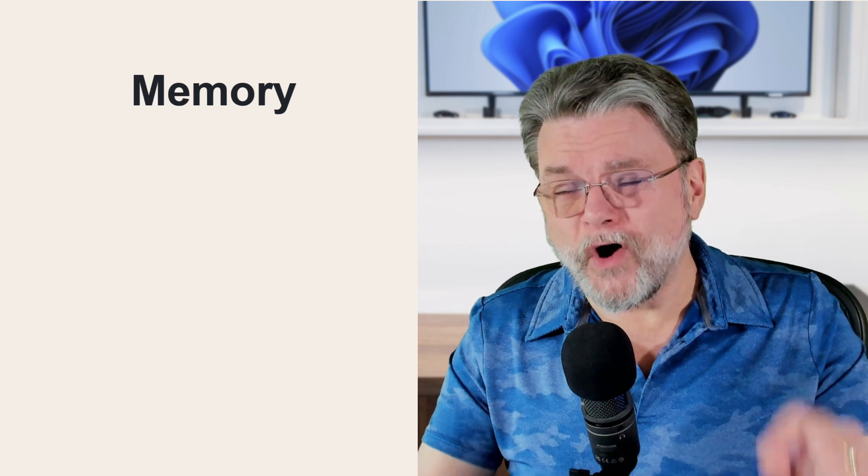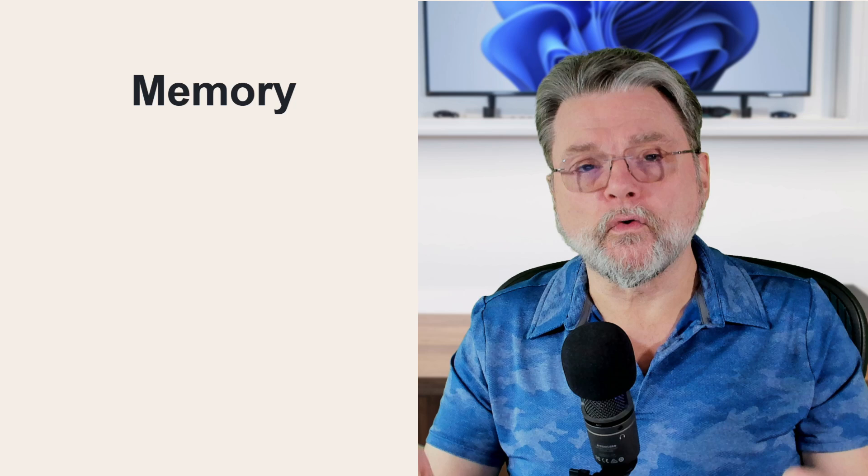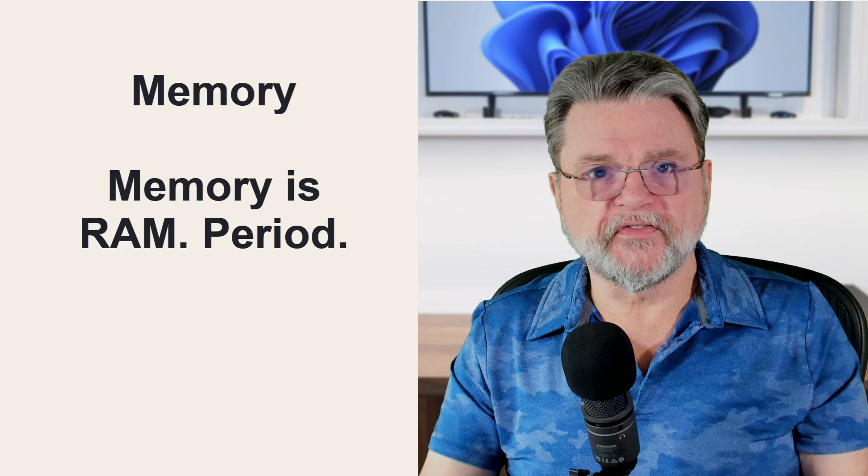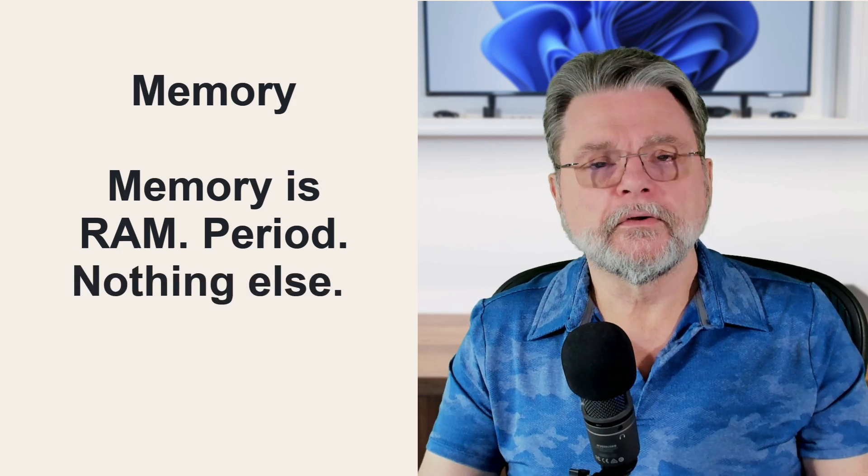Memory — even though all of the things we've just talked about can be considered to have or be a form of memory because they remember things — memory refers exclusively to RAM. So when you tell me that you have two terabytes of memory, you're not talking about RAM. Two terabytes these days are the size of disks; you have two terabytes of disk space. If you're talking about your RAM, the numbers are typically smaller: 16 gigabytes, 32 gigabytes, that kind of thing.